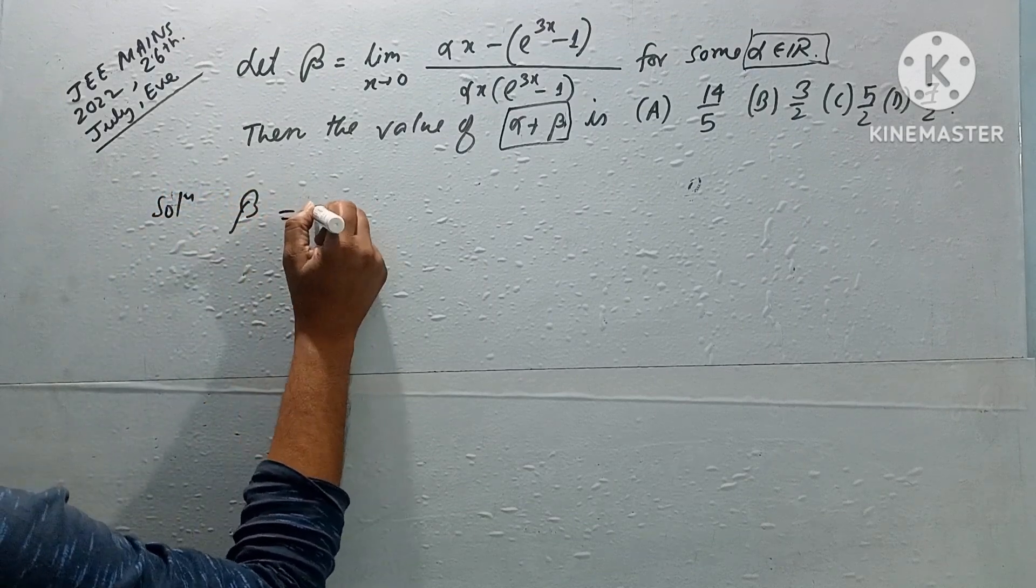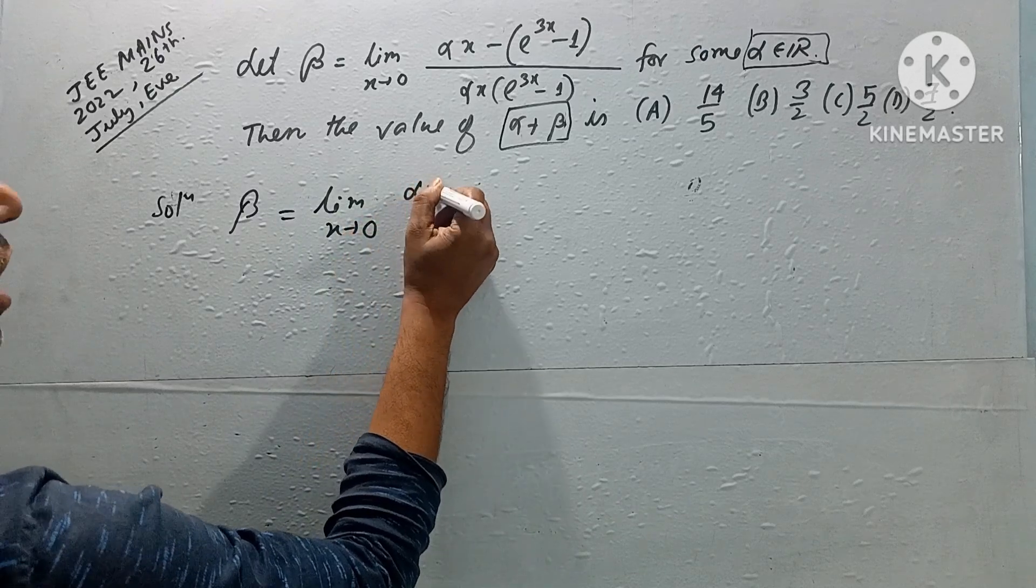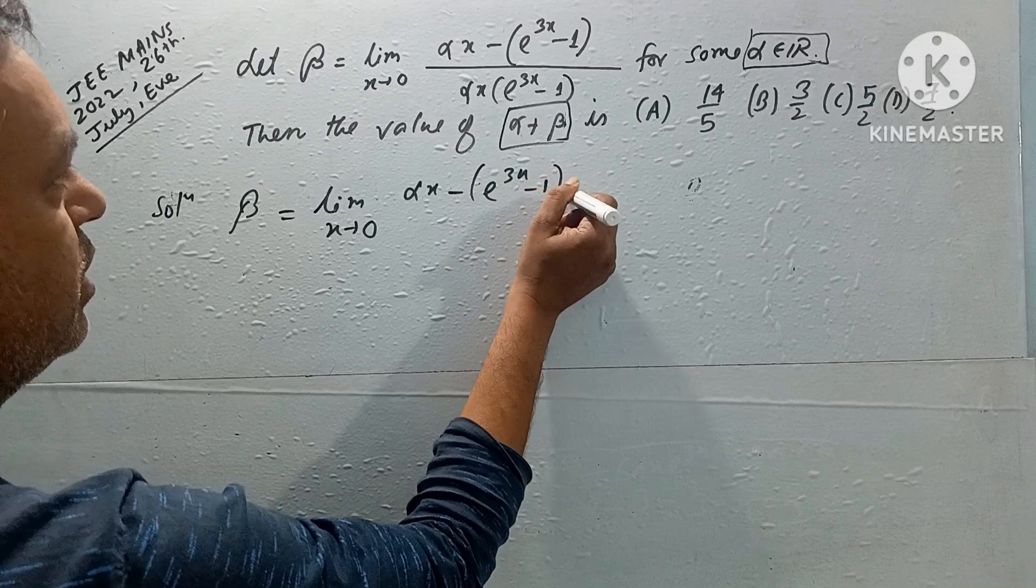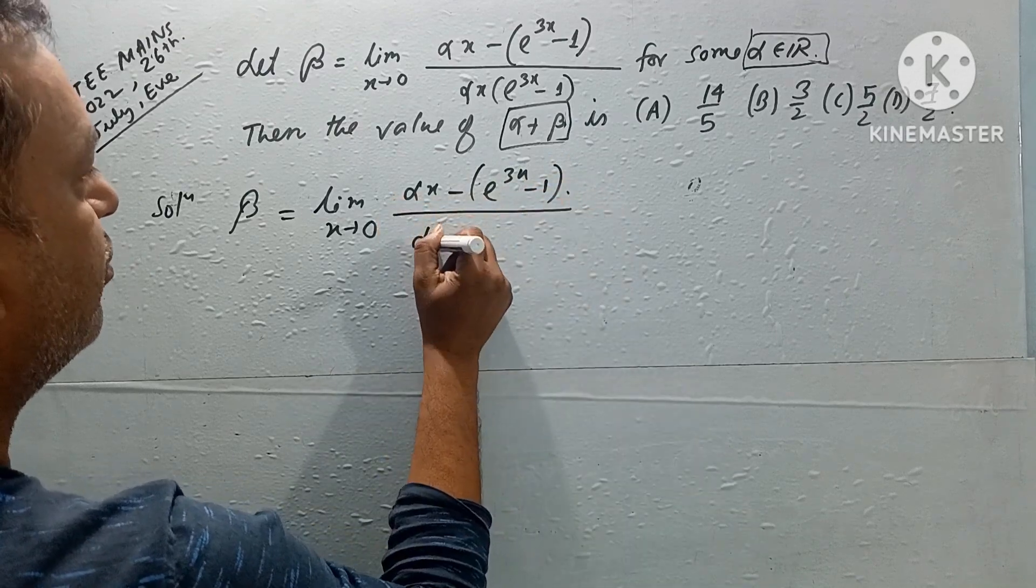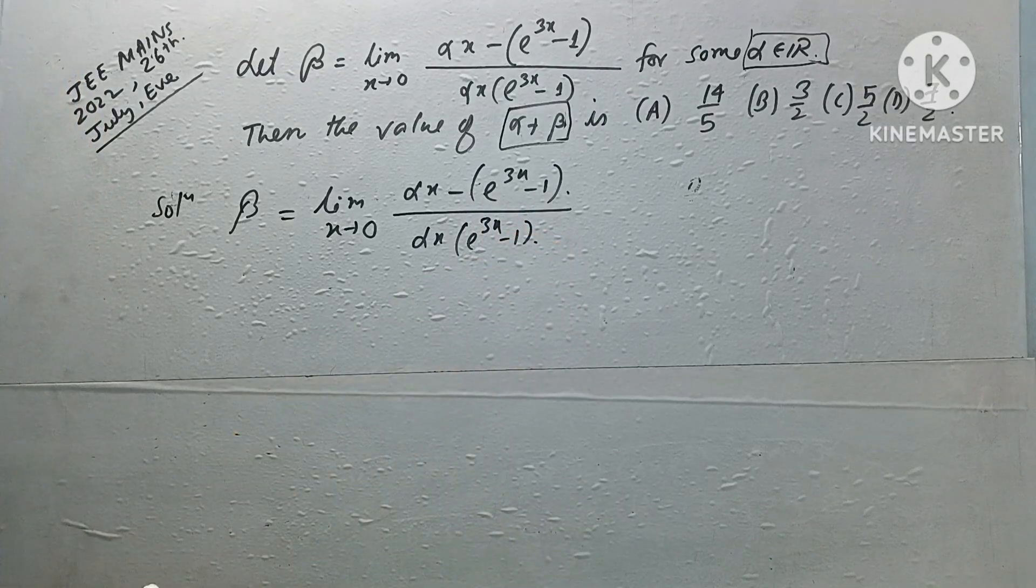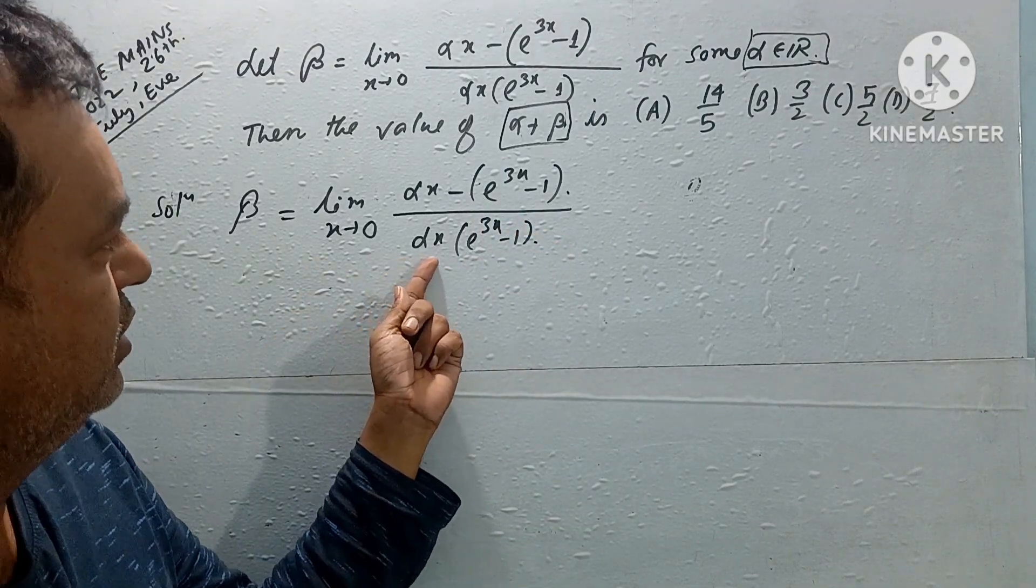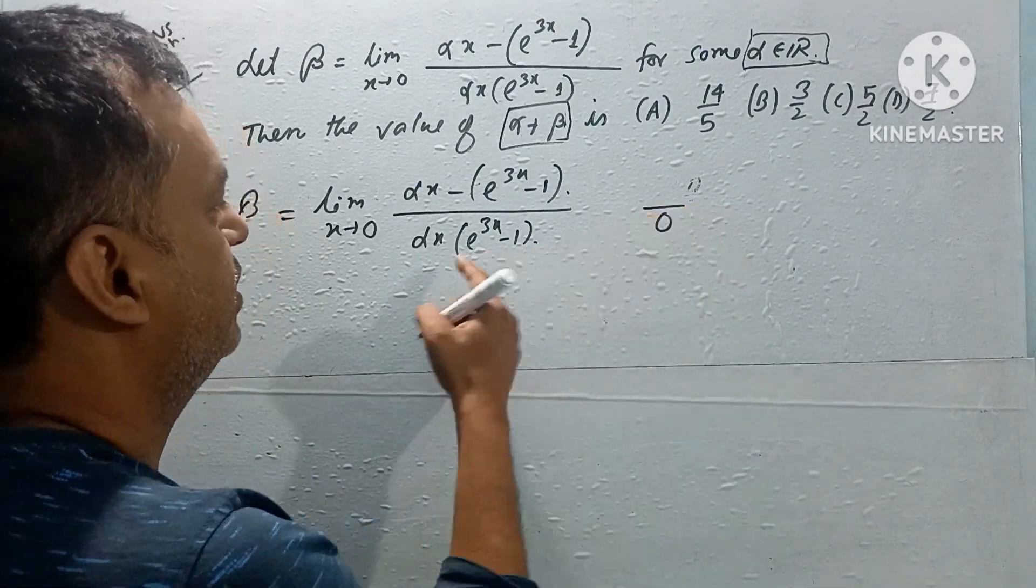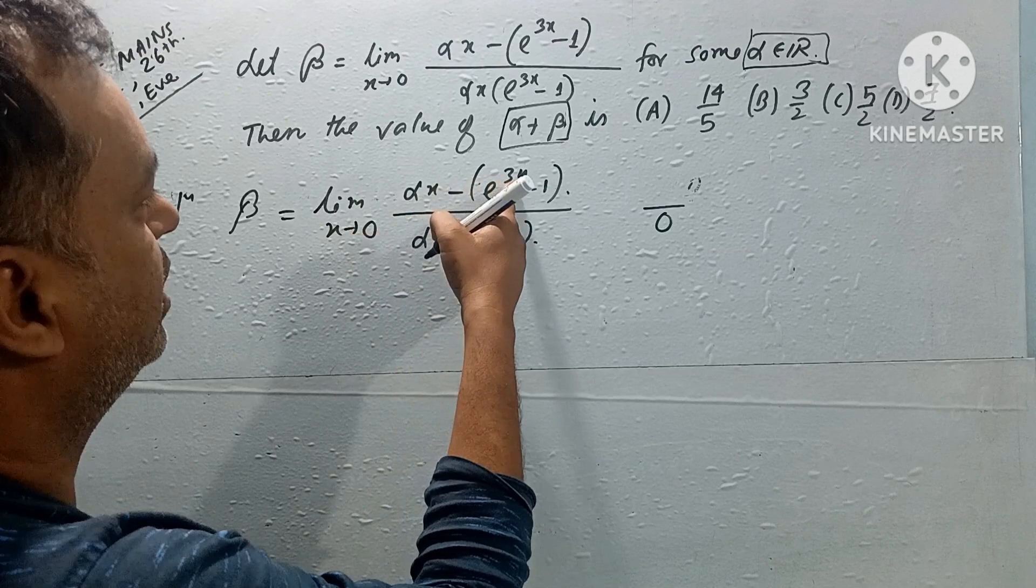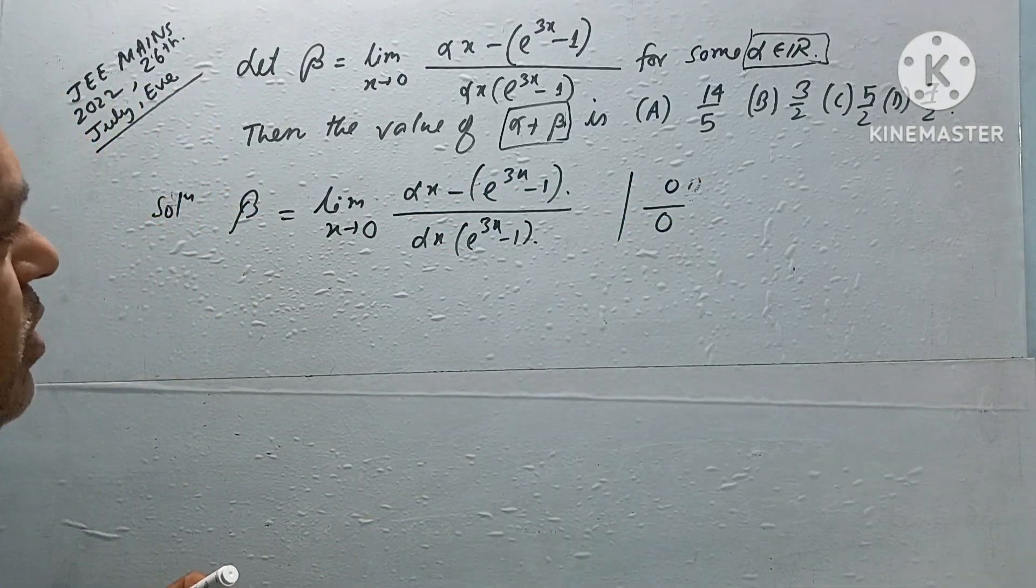So beta equals limit x tending to 0 of alpha x minus e to the power 3x minus 1, divided by alpha x into e power 3x minus 1. When we put the limit, this becomes zero. X multiplied becomes zero. Here it's zero and here one minus one is zero. So we get zero by zero indeterminate form.